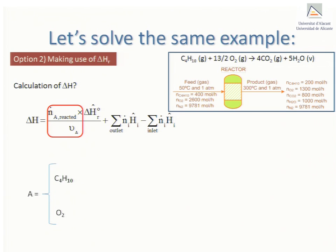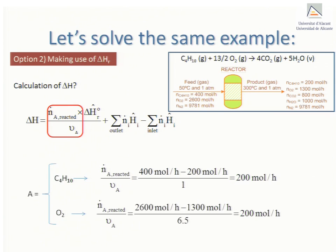Now we could choose either butane or oxygen as the reacting component A. In the event that we chose butane then 200 moles per hour would be the molar flow rate of the reacted butane which is just the difference of the 400 moles per hour butane entering and the 200 moles per hour butane leaving the reactor. If we used oxygen instead then the extent of reaction we calculate should obviously still be 200 moles per hour.